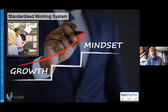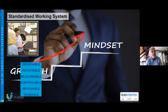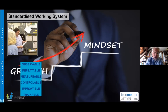There are a number of different features that we need to have in the standardized working system. We need to understand: is it observable, repeatable, measurable, controllable, improvable — and therefore, is it trainable, and how do we train it?